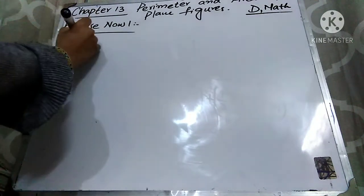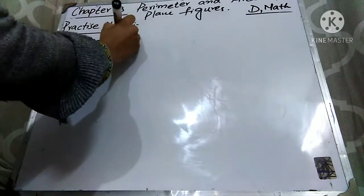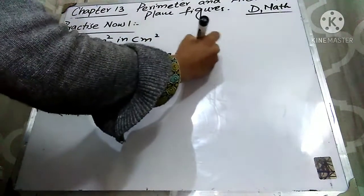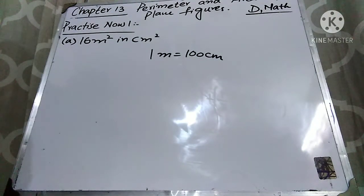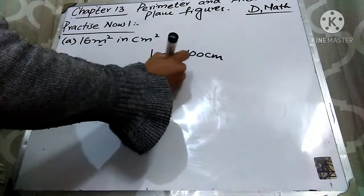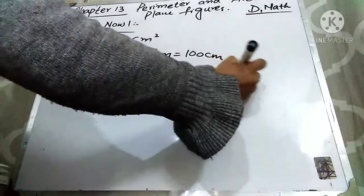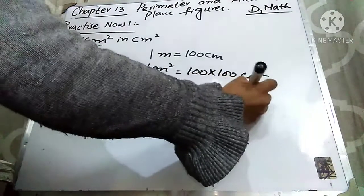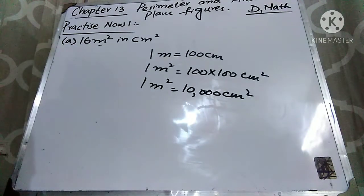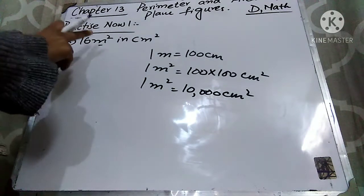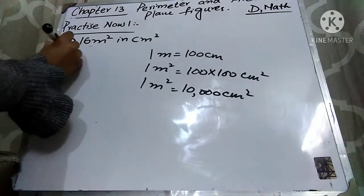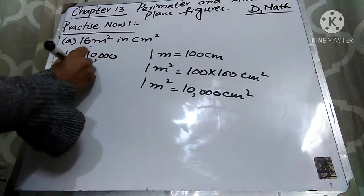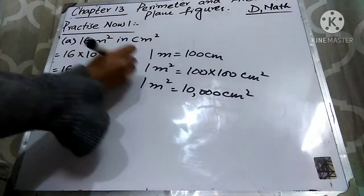Let's start the lecture. For part A, we have to convert 16 meters square into centimeter square. First, you have to understand that one meter is equal to 100 centimeters. So one meter square is equal to 100 multiplied by 100 centimeter square, which gives us 10,000 centimeters square. So to convert meter square into centimeter square, you multiply 16 by 10,000, and you get 160,000 centimeters square — that is your required answer.